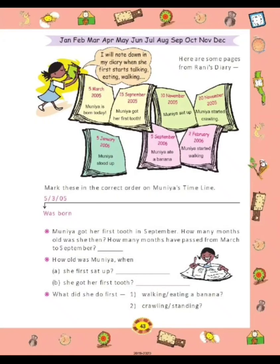Rani has to maintain the record of Muniya's growth. Now she made a timeline. Here are some pages from Rani's diary: 5 March 2005, 15 September 2005, 10 November 2005, 20 November 2005, 5 January 2006, 5 September 2005, and 2 February 2006.